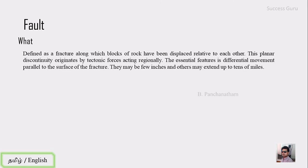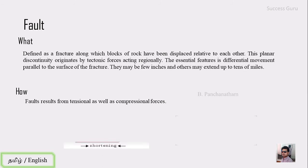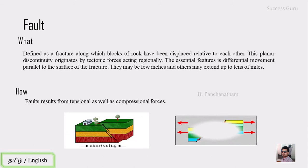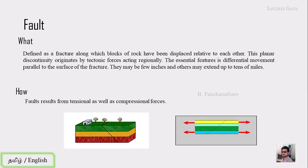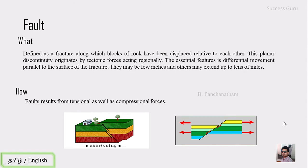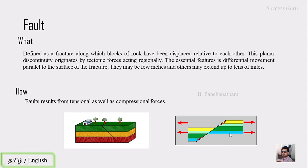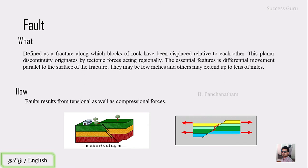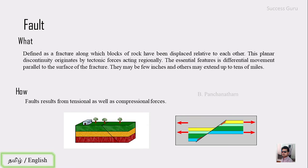The displacement may range from a few inches up to tens of miles. How is a fault formed? The fault results from tensional as well as compressional forces. Due to compression there is formation of a fault, and due to extensional forces also there is formation of a fault. There are also other reasons for the formation of faults, which we will see in the classification in later slides.